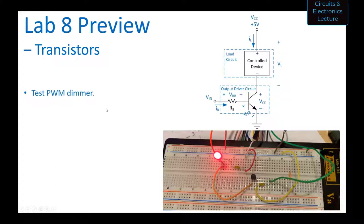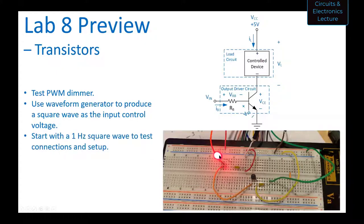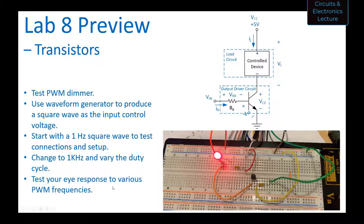Next you'll test a pulse width modulated dimmer. Your circuit will use a waveform generator instead of a DC power supply to produce a square wave as the input control voltage. You'll start with a 1 Hz square wave just to get the LED to blink and test your connections, then increase the frequency to 1 kHz and vary the duty cycle — you'll see you can dim the LED down to nothing by changing the duty cycle.